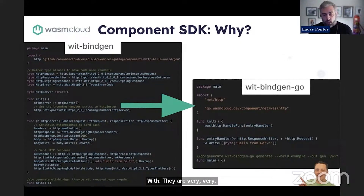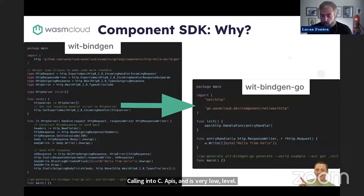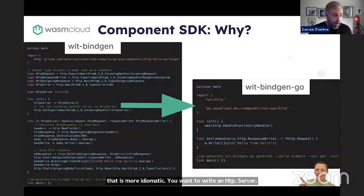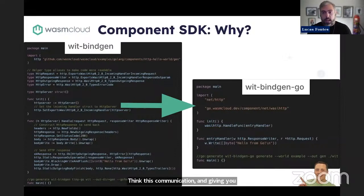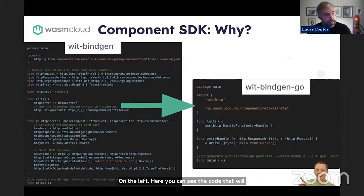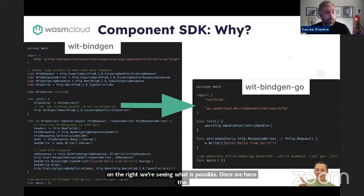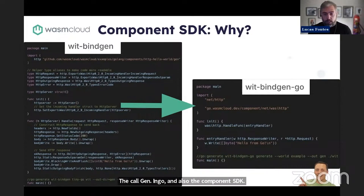In reality, what we want to do is write Go code that is more idiomatic. You want to write an HTTP server with a handler, you want a round-tripper — you don't want to be calling into WASI interfaces all the time. So the component SDK abstracts this communication and gives you standard library constructs that you are familiar with. On the left you can see the code generated with the initial bindgen, and on the right what is possible with the new code gen in Go and the component SDK — it's essentially a regular web server in Go.